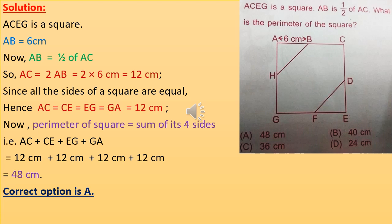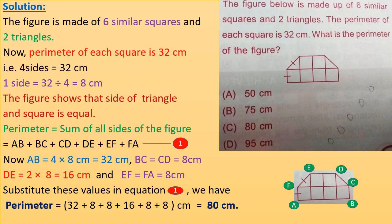The perimeter of the square equals the sum of its four sides — AC plus CE plus EG plus GA equals 12 cm plus 12 cm plus 12 cm plus 12 cm equals 48 cm. The correct option is A.